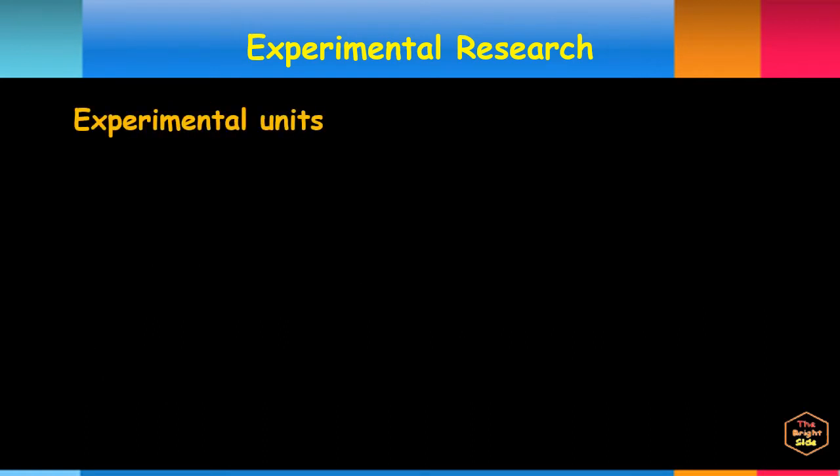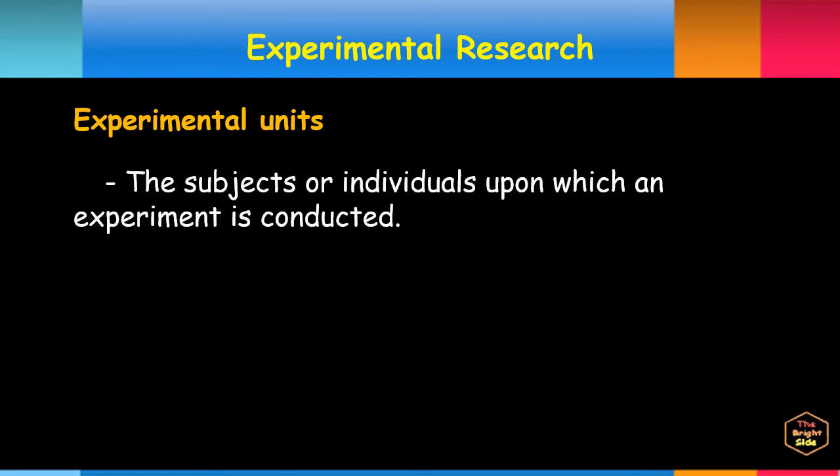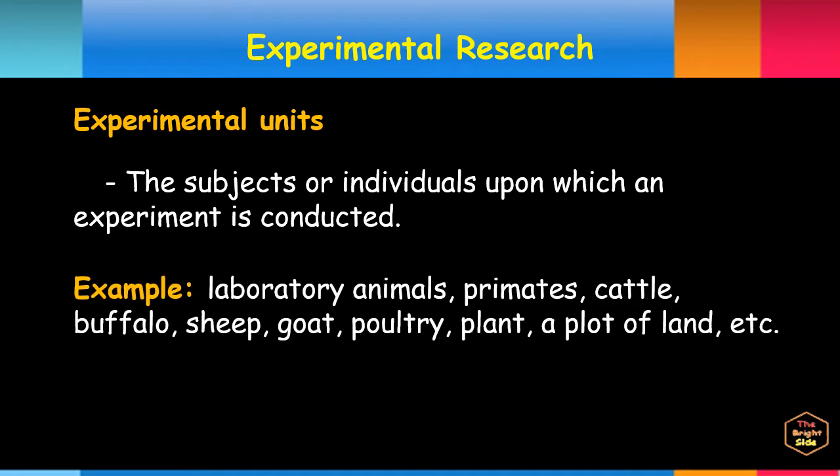The experimental units are the subjects or individuals upon which an experiment is conducted. Examples are laboratory animals, primates, cattle, buffalo, sheep, goat, poultry, plant, a plot of land, etc.